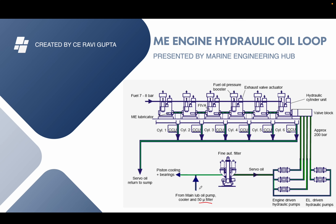The oil used for piston cooling and bearing lubrication is again filtered to make sure it does not have any abrasive particles, and the filter is a 50 micron filter. Now after filtration the oil is pumped by two means: if the engine is stopped, we use the electrically driven pump; if the engine is running, we use the engine driven pump to pump the oil.